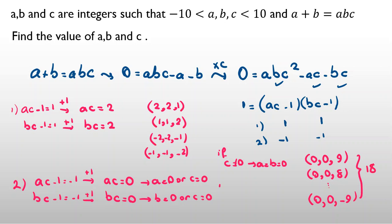But if C is zero, A and B can be any number. Considering C is zero with A and B ranging from negative nine to positive nine, we have 19 times 19 equals 361 answers. So the total number of answers is 361 plus 4, giving 365.